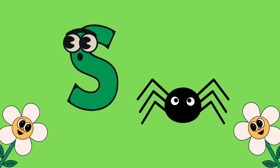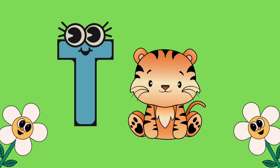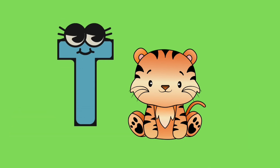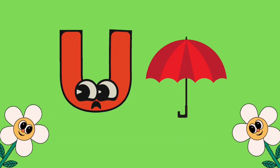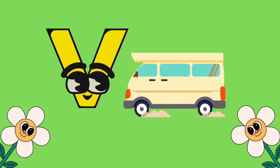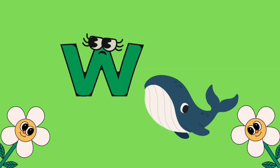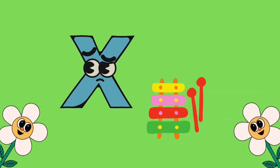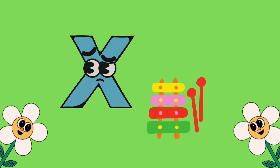S is for spider, T is for tiger, U is for umbrella, V is for van, W is for whale, X is for xylophone.